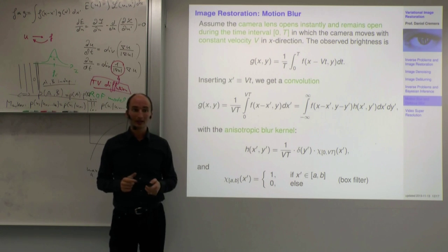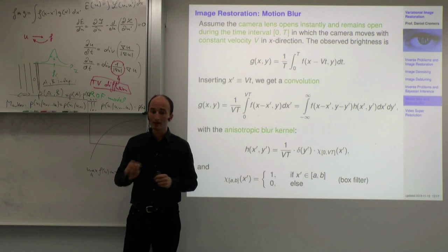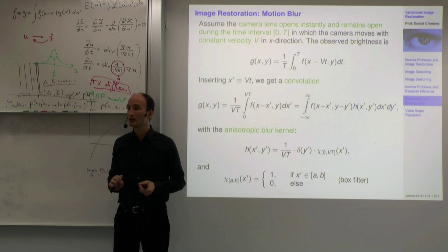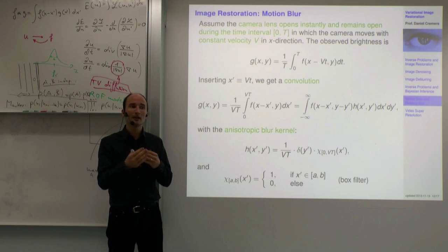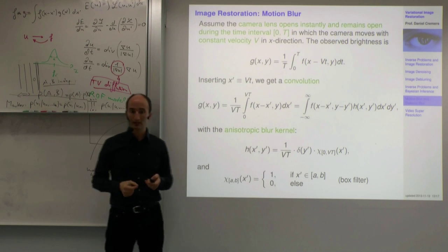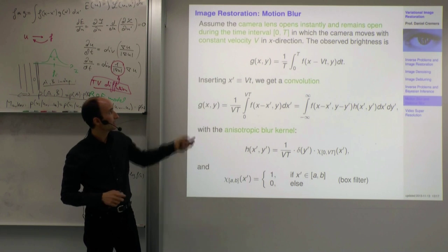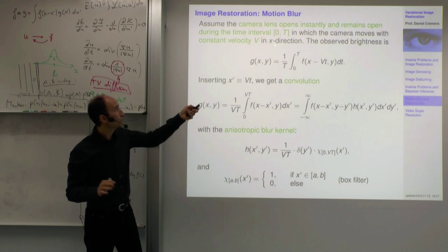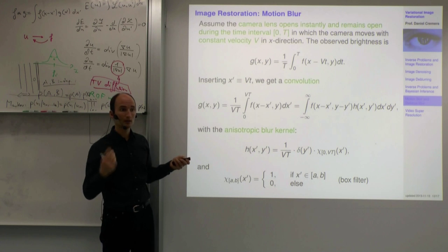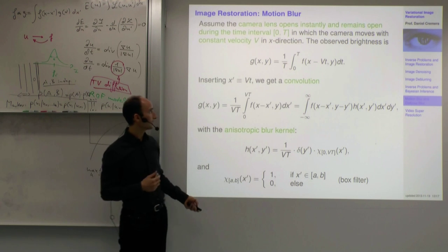We can model that blurring with a simple assumption: the object moves with a constant velocity during the aperture time. The observed intensity at pixel (x, y), assuming motion in the x direction, is an integral over time of the true image at slightly displaced points. V is the velocity vector, so we see the color at shifted locations. This can be rewritten by substituting x' = v·t, giving a convolution form.